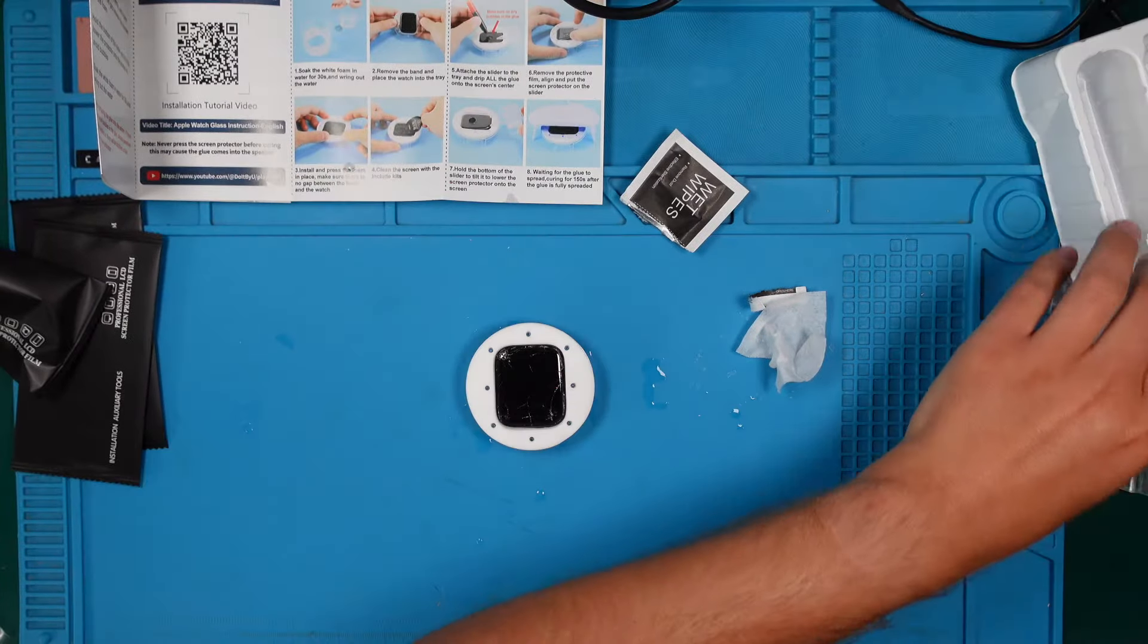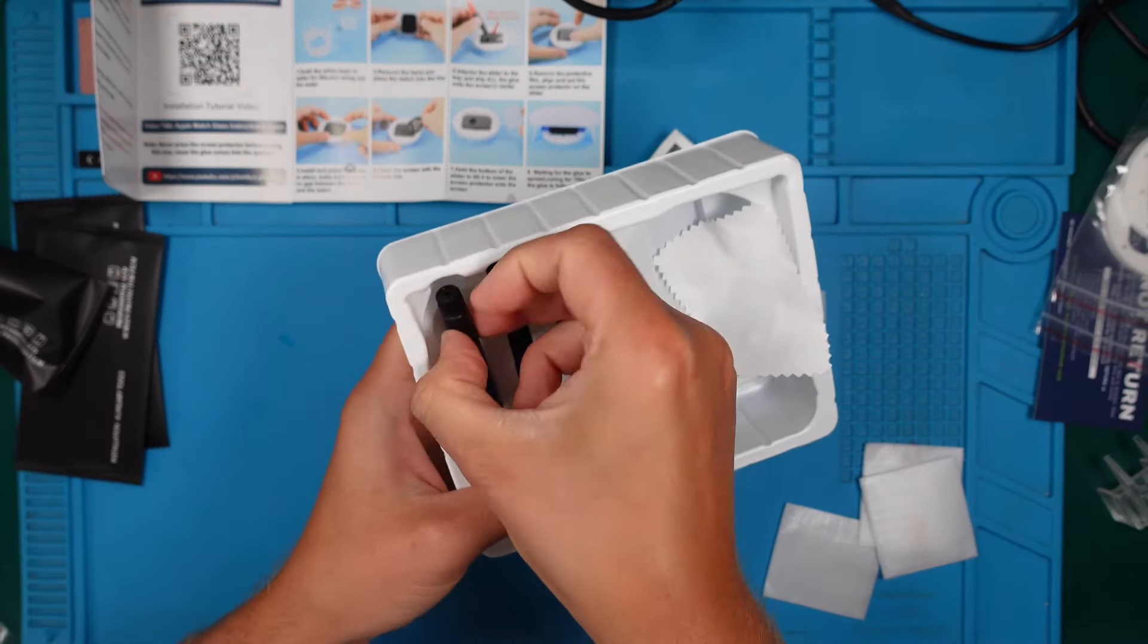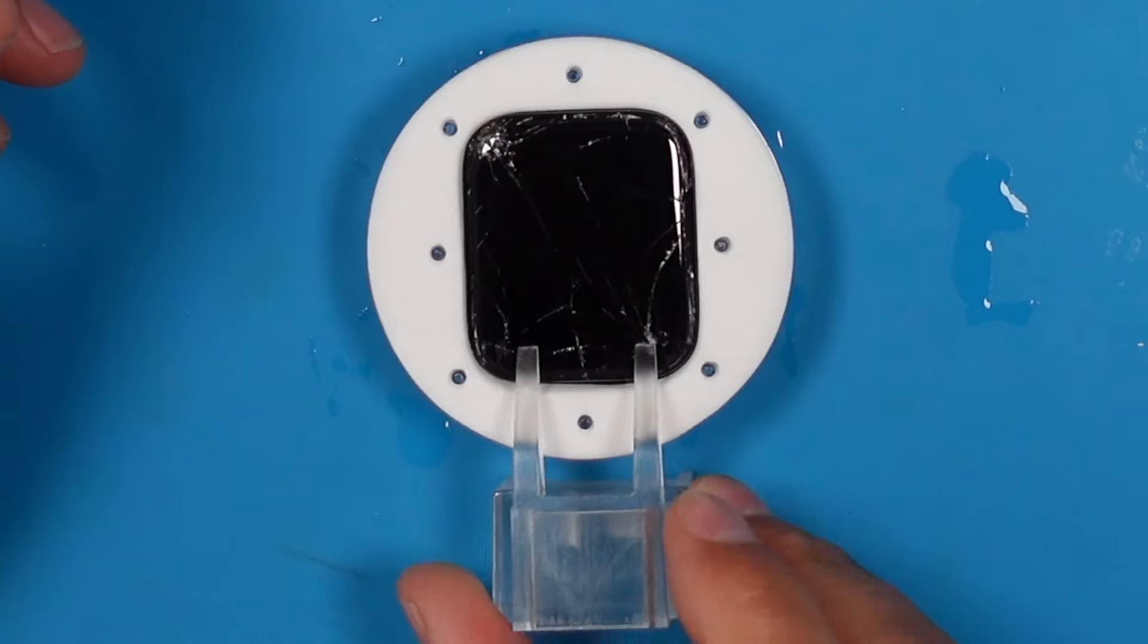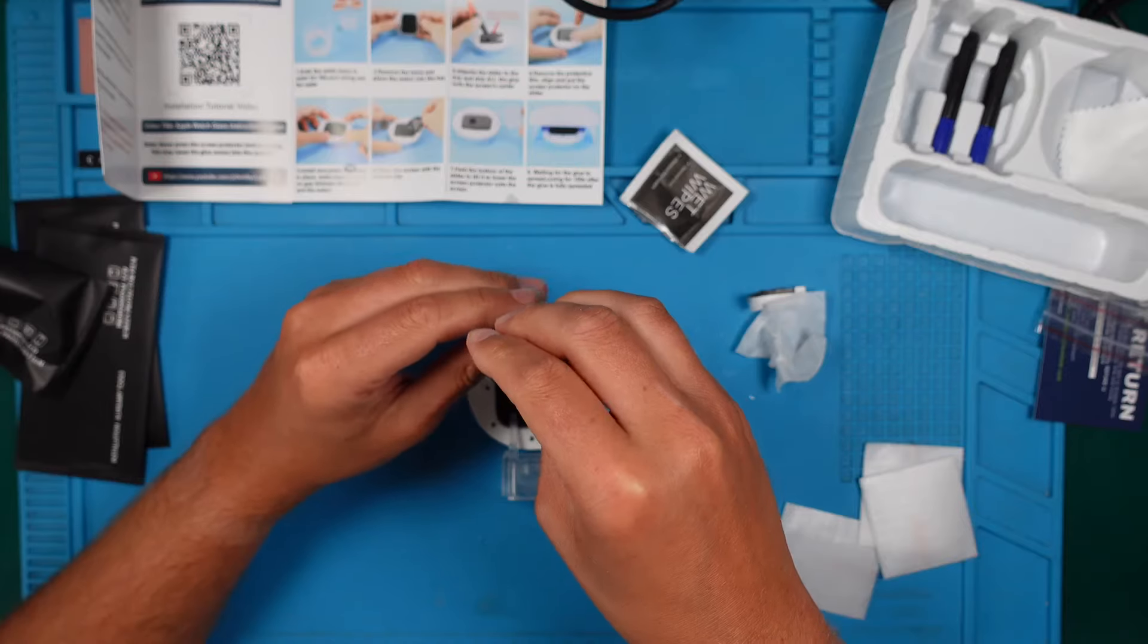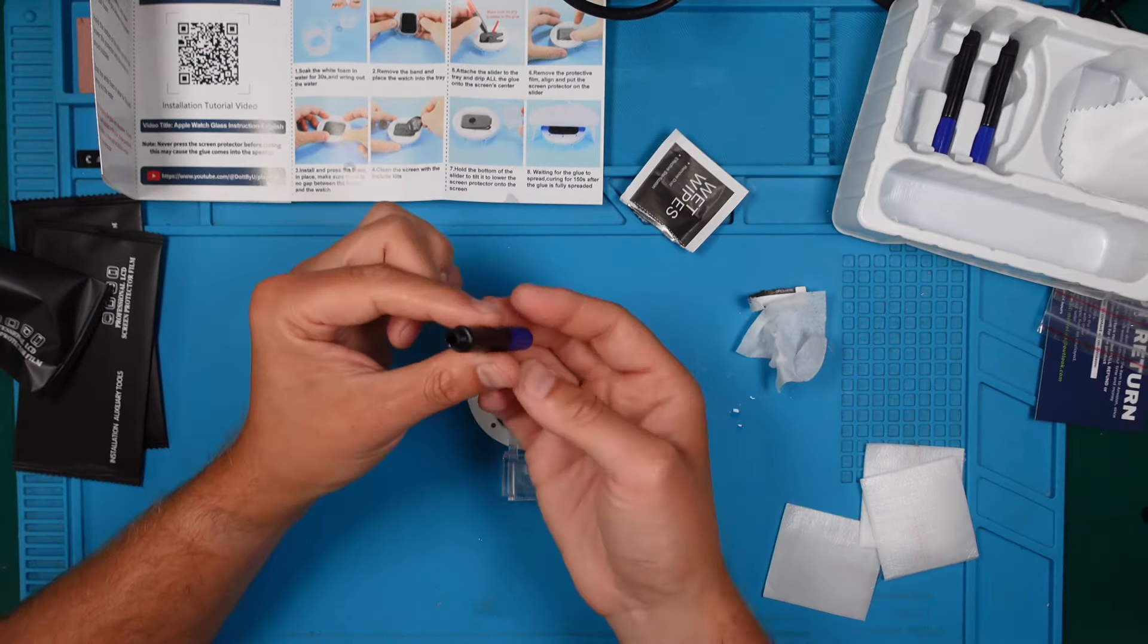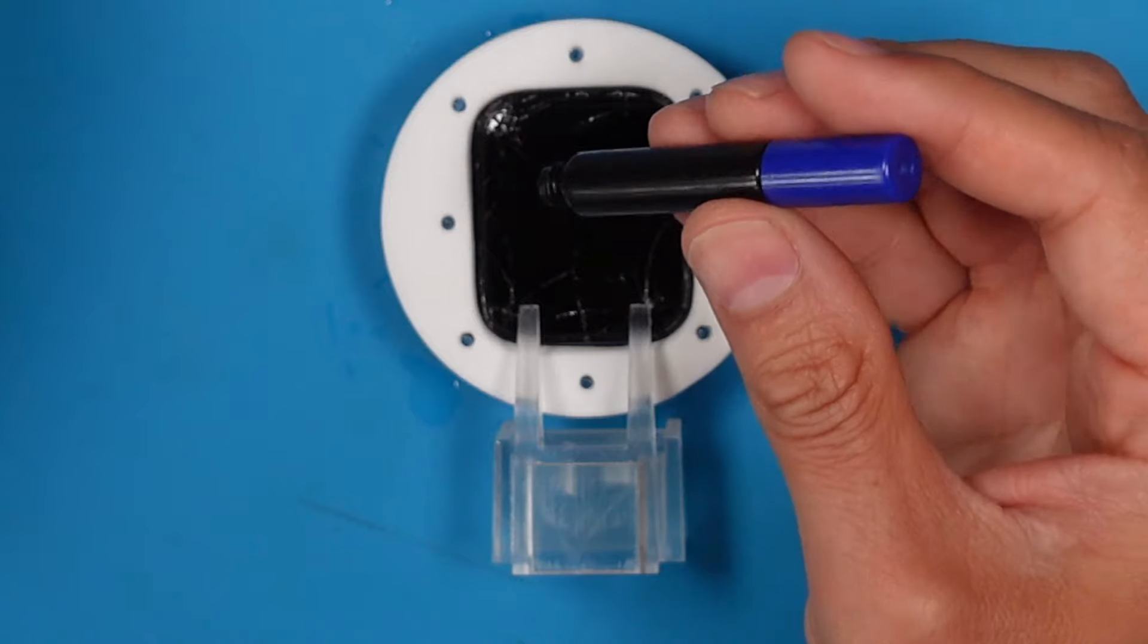Turn this back on. Now to the fun part. We have three glasses, so we have three tubes of UV glue. Let's use the first one. And we can move this here. Now drip all the glue. I think that's a lot, but okay, let's try it.